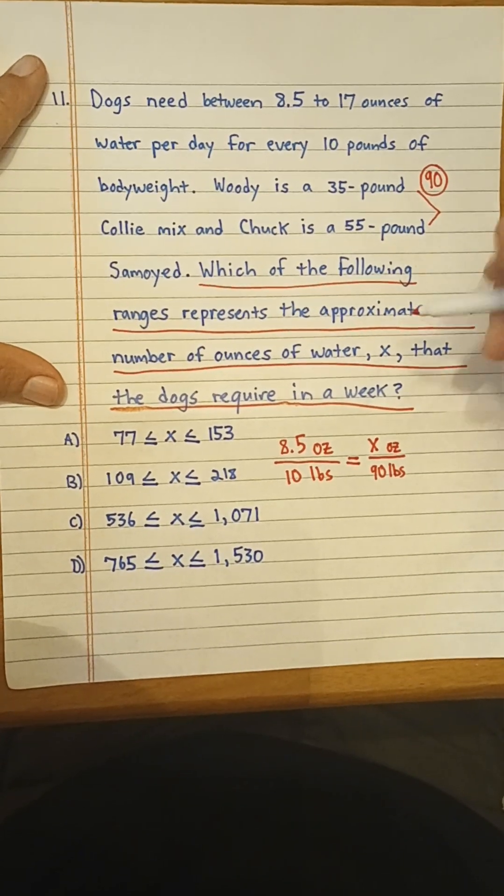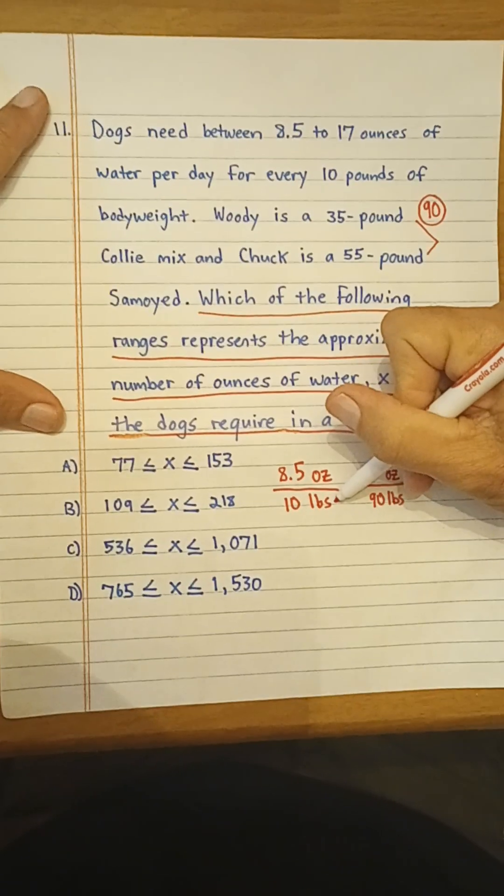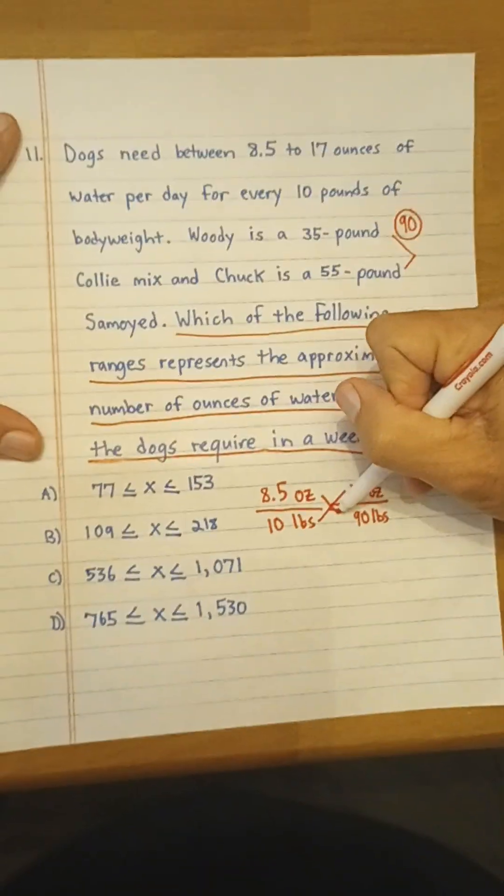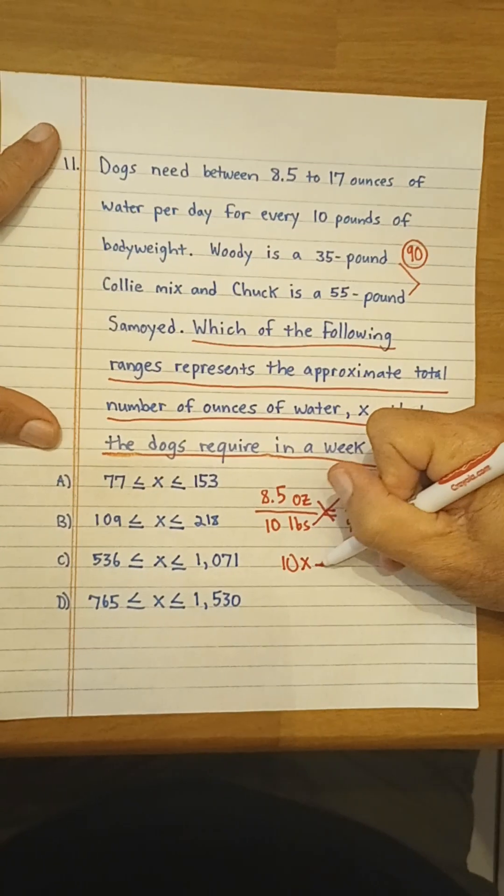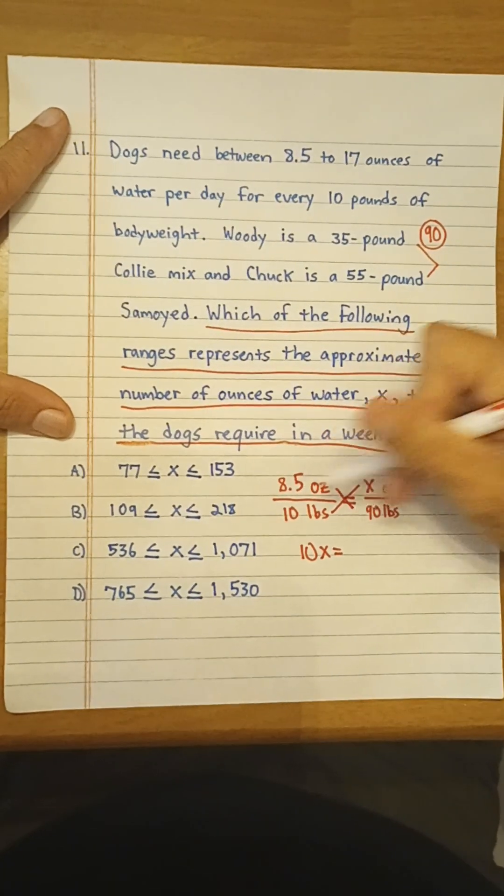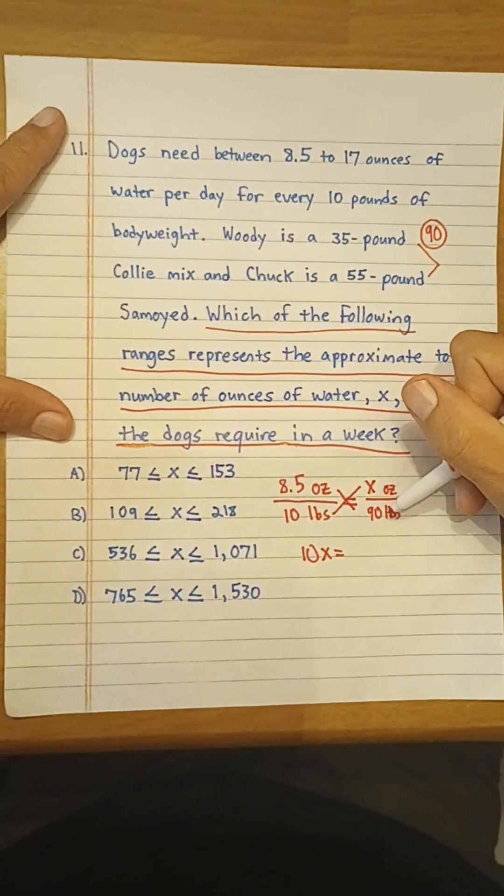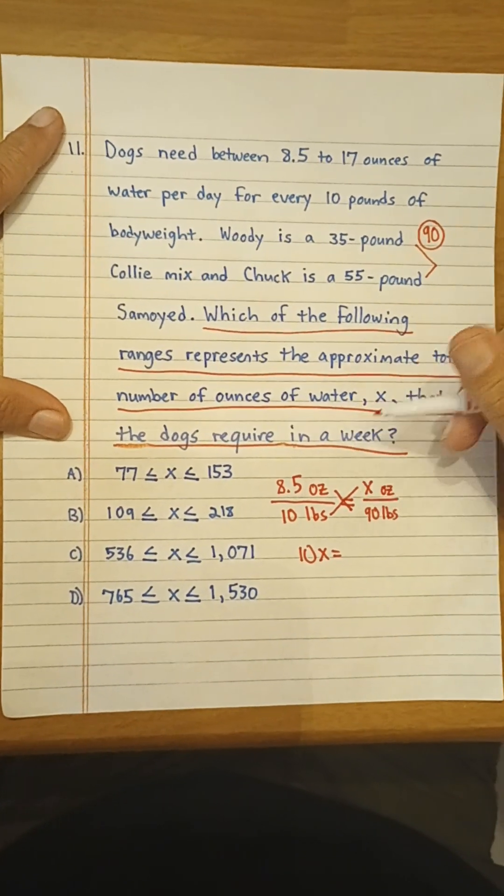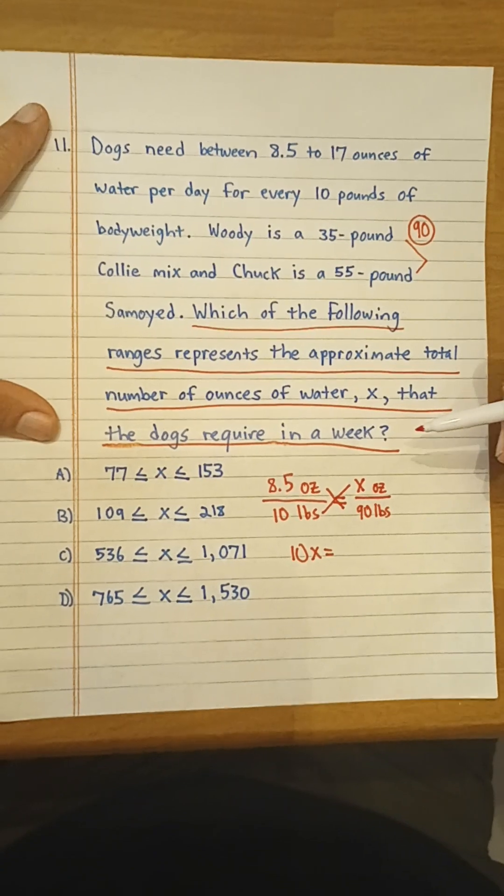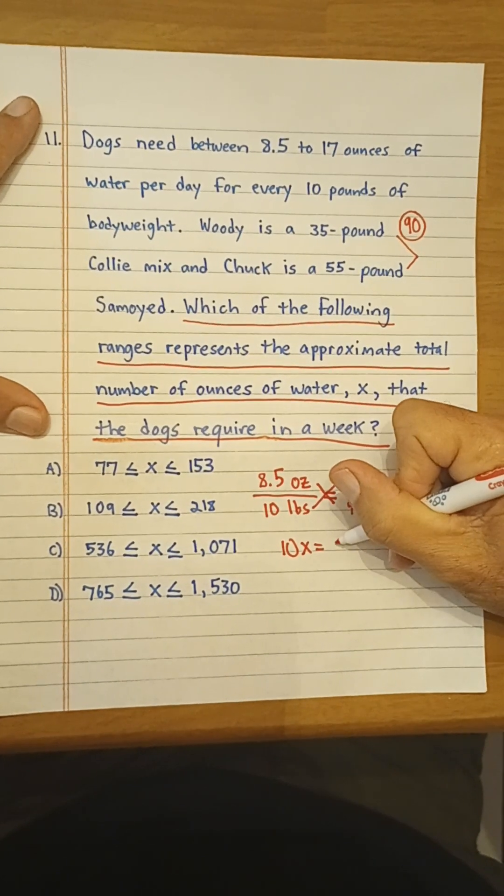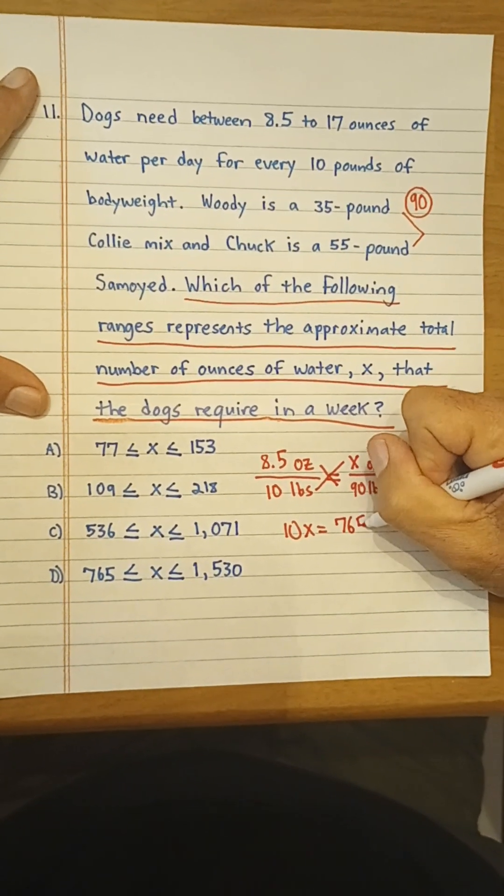Okay, so we're going to cross-multiply and solve for x. So we'll get 10x, and 90 times 8 is 720, 90 times 0.5 is 45, 720 plus 45 would be 765.